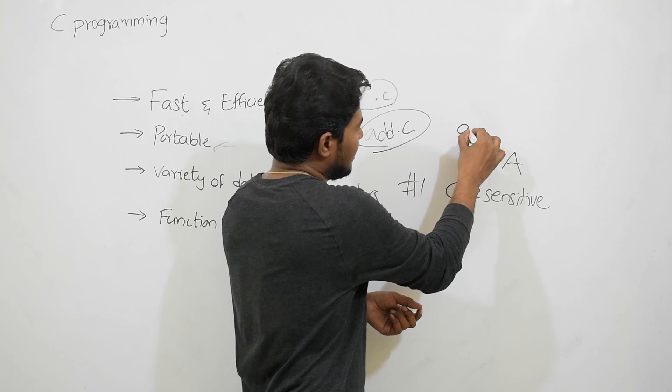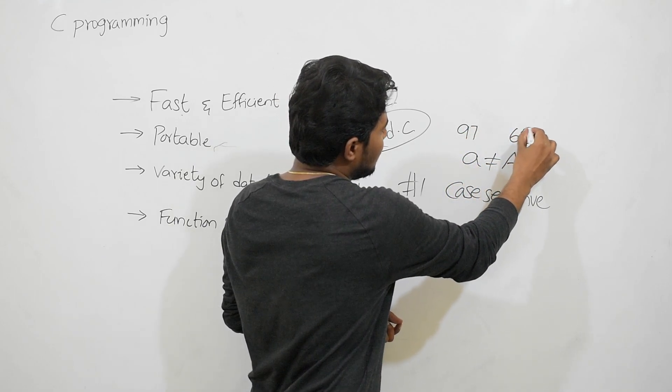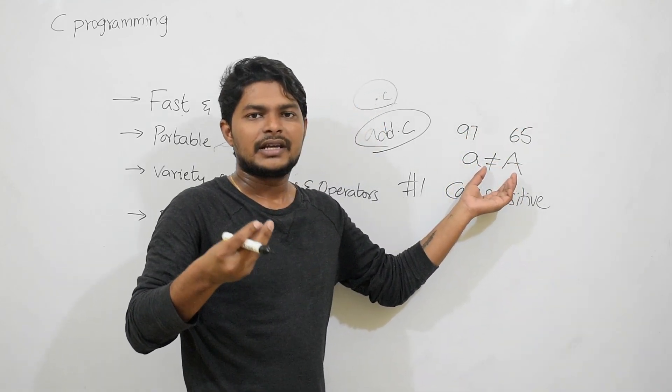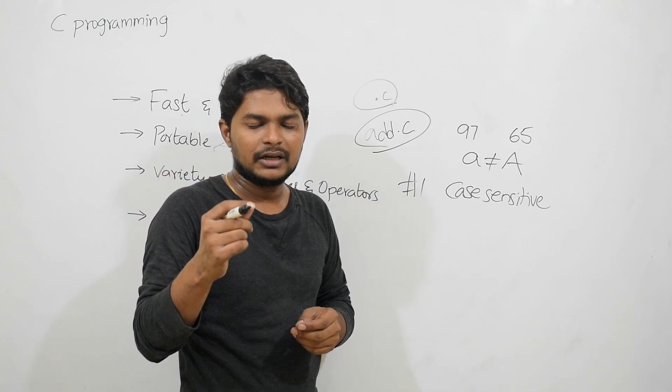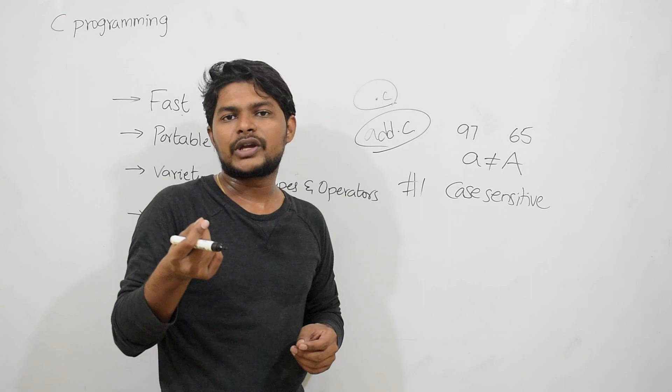Why? Because small a ASCII value is 97, capital A ASCII value is 65. Small letters are different and capital letters are different. Remember, we have 32 keywords in C program where all keywords are in small letters only.